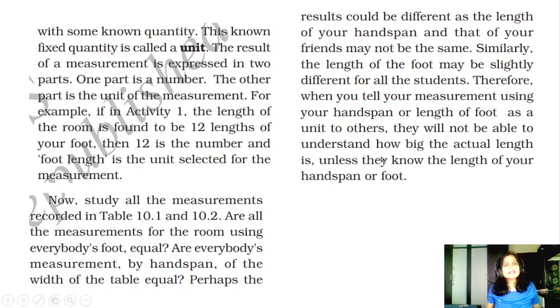That is why we need a standard unit to measure with some known quantity. This known fixed quantity is called unit. The result of the measurement is expressed in two parts. One part is a number, other part is unit of the measurement. Do you remember this, you write 1 cm length, this is a number and centimeter is the unit. For example, if in activity 1, the length of the room is found to be 12 lengths of your foot, then 12 is the number and foot length is the unit selected for the measurement.